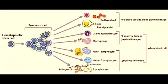How do all blood cells start off? All blood cells start off as hemopoietic stem cells, which can differentiate into any blood cell. The HSCs will first differentiate into precursor cells and then form cells in different lineages, such as the lymphocyte lineage, myeloid lineage, and the red blood cell and blood platelet lineage.